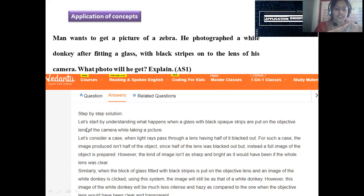Then step-by-step explanation was given here. Let's start by understanding what happens when the glass with the black opaque strips were put on the objective lens of the camera while taking the picture. Let's consider a case when the light rays pass through the lens having half of it blacked out. So only half are allowed to move and the remaining will be discarded. For such a case, the image produced isn't half of the object. In that case, half light captured that gives only half of the object. That is not a correct answer.